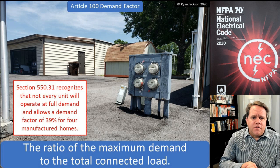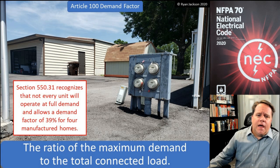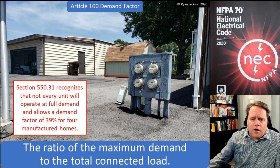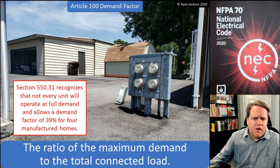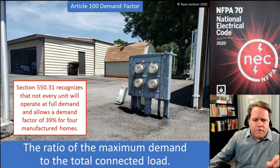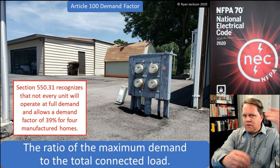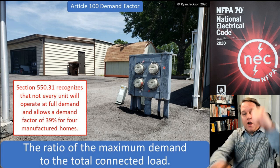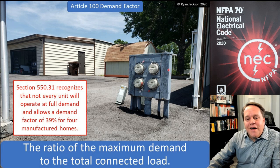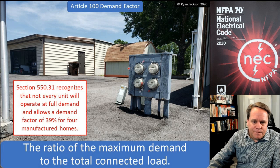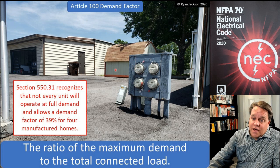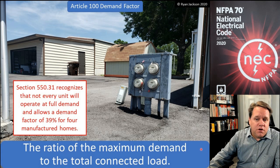Here in the picture we have some manufactured homes and a service that supplies them. Each one of these has — I'm guessing — a 100-amp breaker. I took the picture but didn't get into the service disconnect, so each one of these has a 100-amp breaker. From the 100-amp breaker to the unit, we have to size that basically at 100 amps.